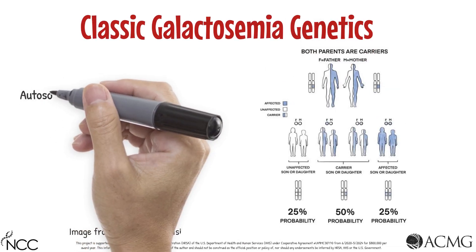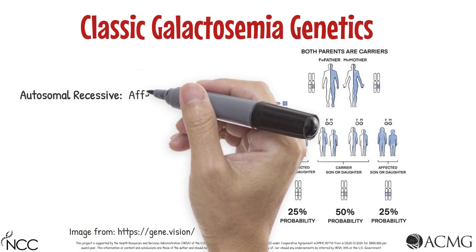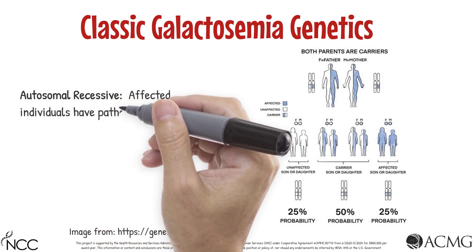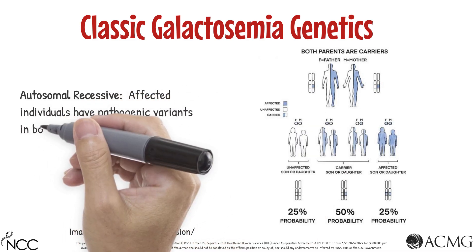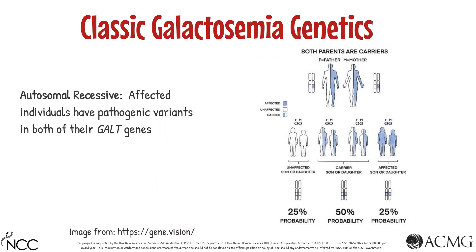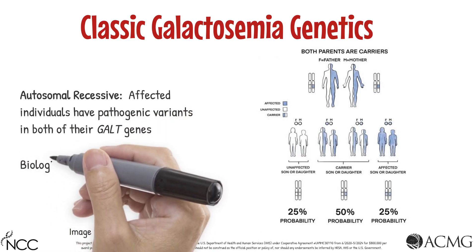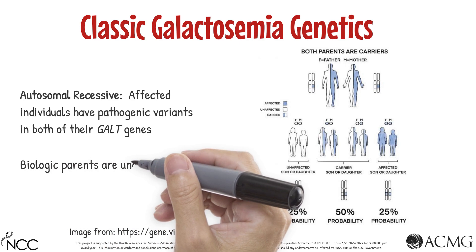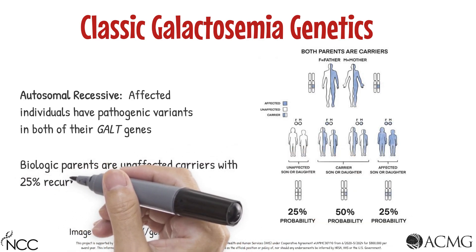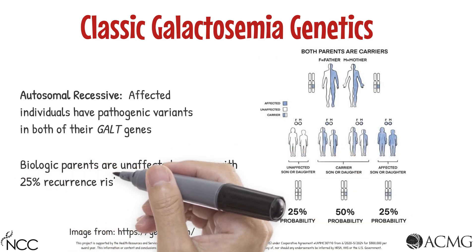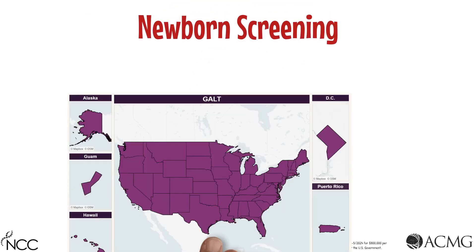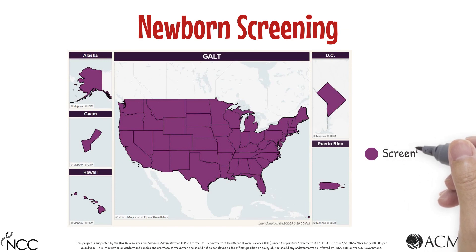Classic Galactosemia is inherited in an autosomal recessive manner, meaning that only infants with a pathogenic variant in both of their GALT genes will be affected. Parents with a child with Classic Galactosemia are carriers and are unaffected, but have a 25% recurrence risk with any future children they have together.